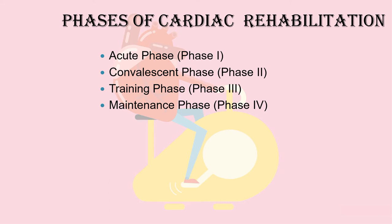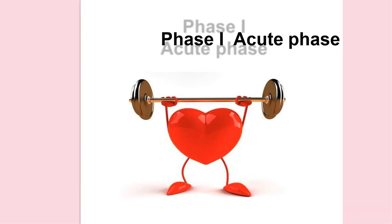Cardiac rehabilitation is divided into four phases: Phase 1 (acute phase), Phase 2, Phase 3 (training phase), and Phase 4 (maintenance phase). We will start with Phase 1 — the acute phase — which begins in the inpatient setting soon after a cardiovascular event or completion of an intervention.